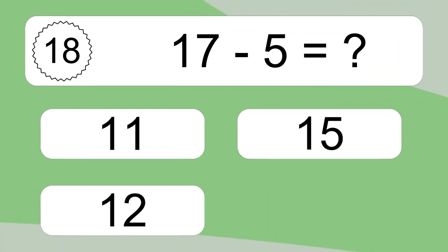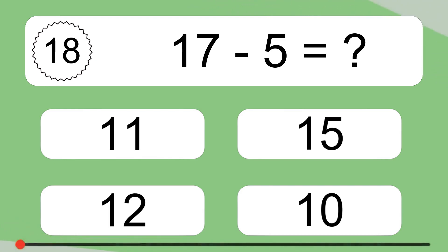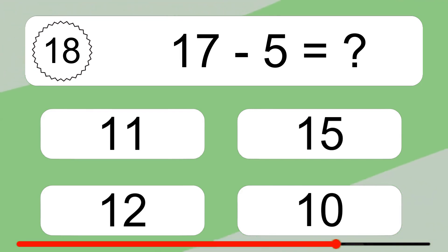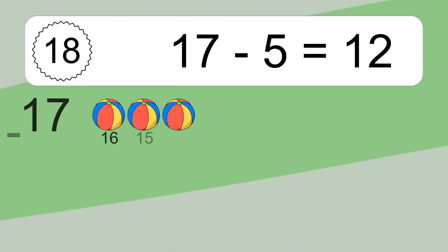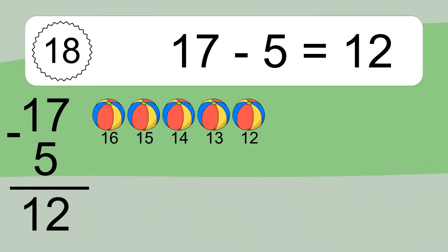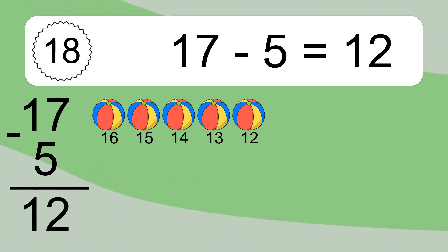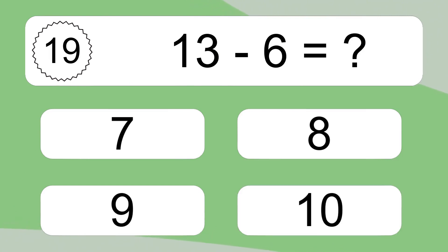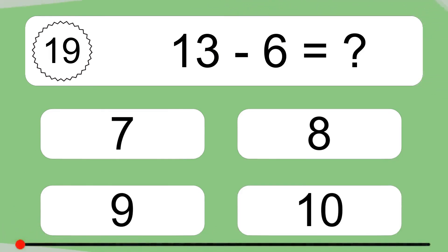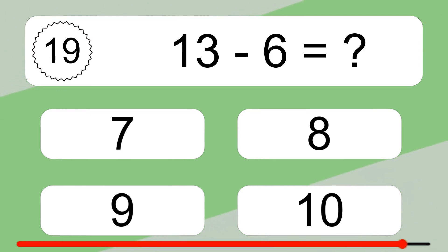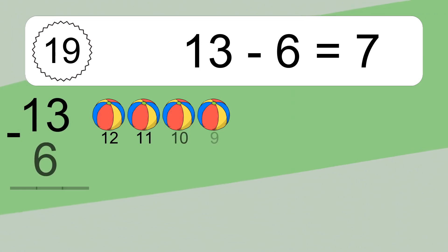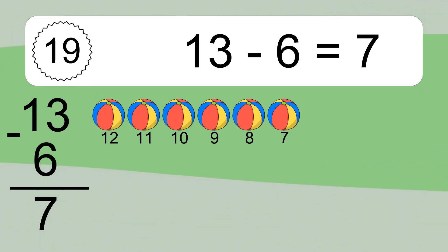17 minus 5 equals what? 13 minus 6 equals 7. Let's count it. 12, 11, 10, 9, 8, 7.